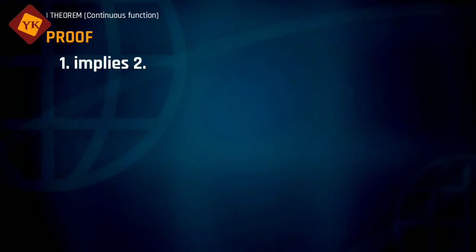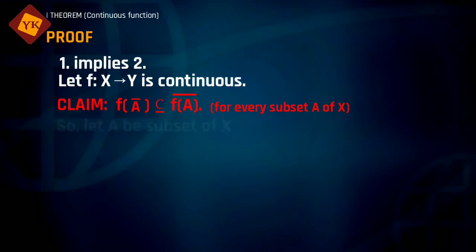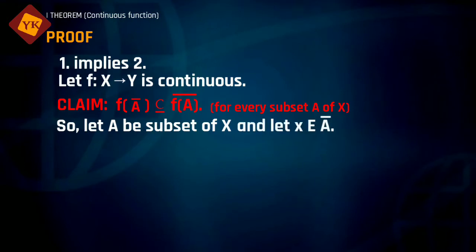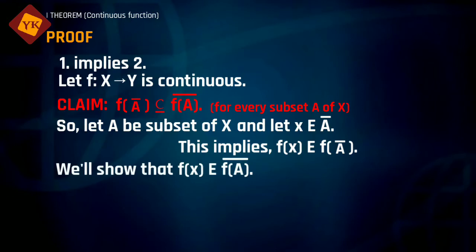First we will show that statement 1 implies statement 2. Let f from X to Y be a continuous function. Our claim is to show that for every subset A of X, f of A-closure is contained inside the closure of f(A). We consider A as a subset of X and take x belonging to A-closure, meaning f(x) belongs to f(A-closure). We will show that this element belongs to the closure of f(A).